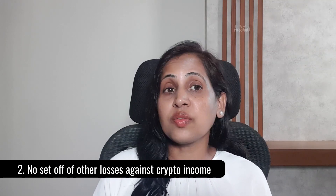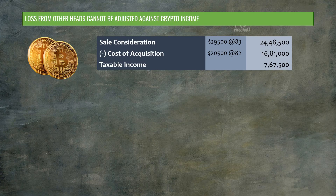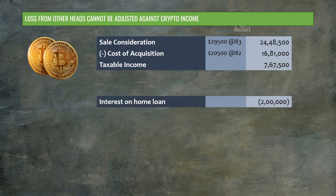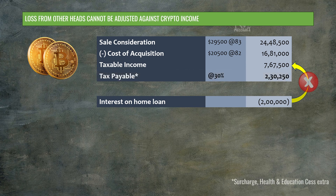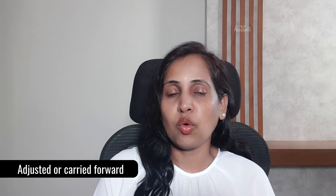Second: if you have a loss under any other head, you cannot adjust such losses from crypto income. For instance, if you have taxable crypto income of Rs. 7,67,500 and you are also eligible to claim a deduction of Rs. 2 lakh for interest on a home loan, this adjustment against crypto income is not possible. So taxable income remains Rs. 7,67,500. However, the house property loss can either be adjusted against other income or carried forward for up to 8 years.